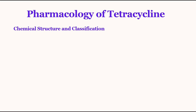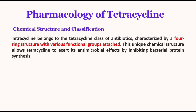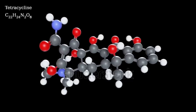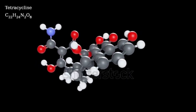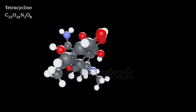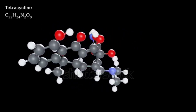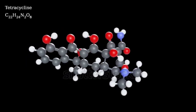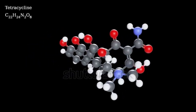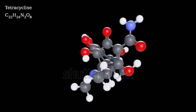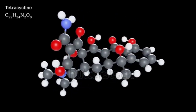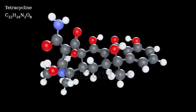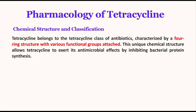First, pharmacology of tetracycline. The chemical structure of tetracycline belongs to the tetracycline class of antibiotics — the name refers to its four-ring structure. It consists of four ring structures with functional groups attached. This unique chemical structure provides the properties in tetracycline that produce its anti-microbial effects.